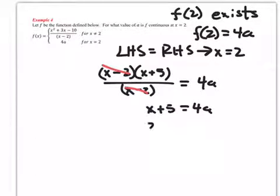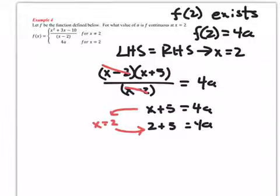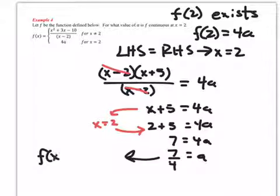So if x equals 2, so when x equals 2, it looks like I get 7 equals 4a, and therefore a has to equal 7 fourths. So when a equals 7 fourths, f of x is continuous.